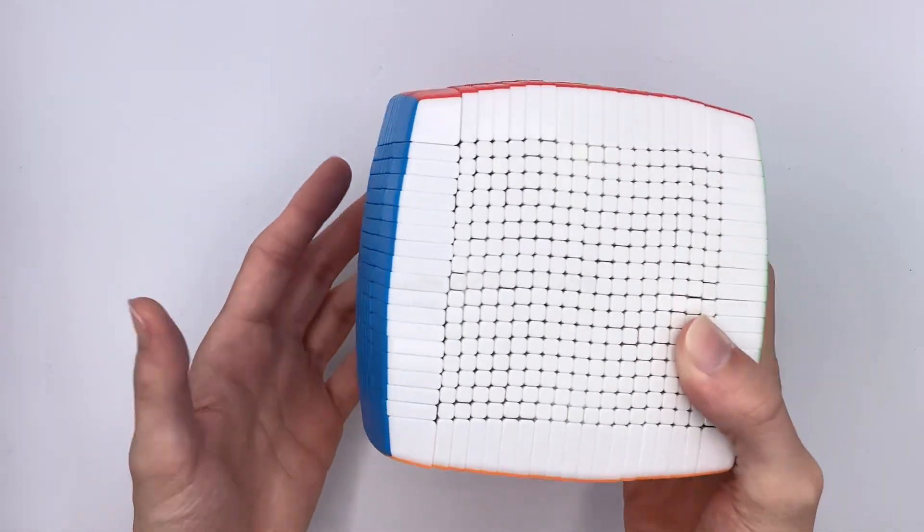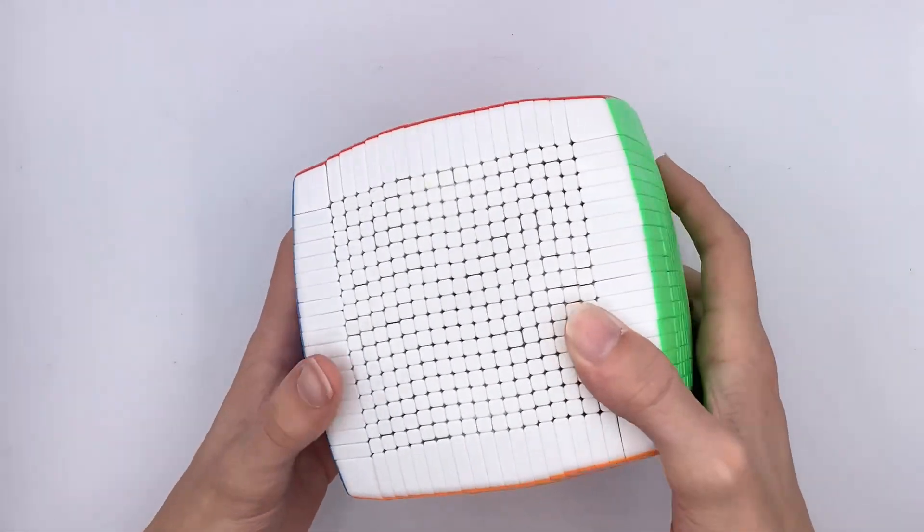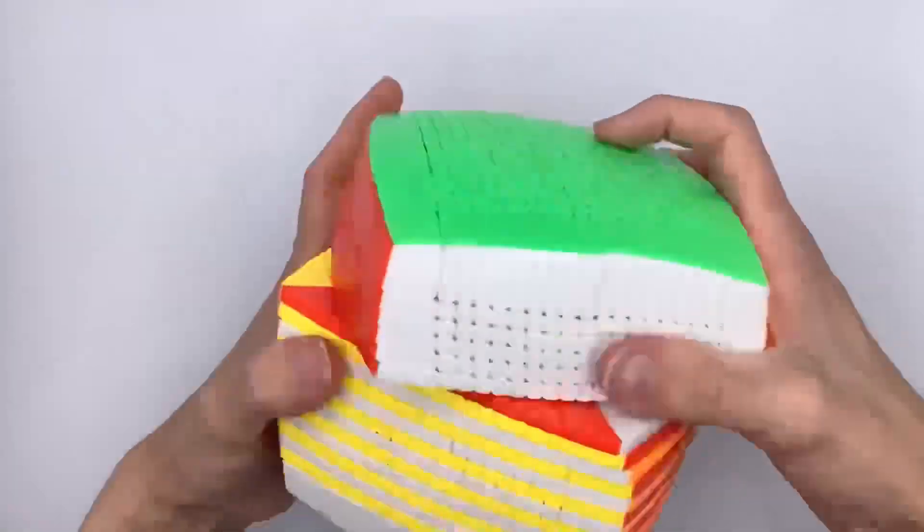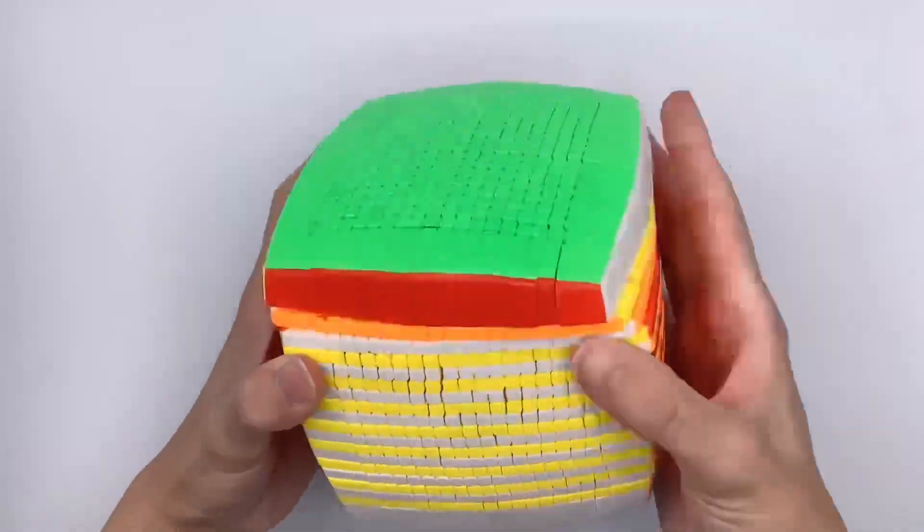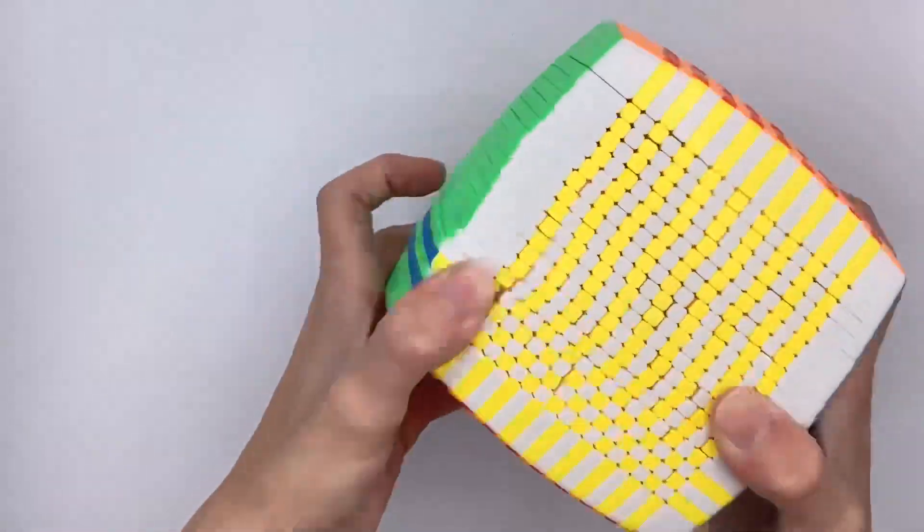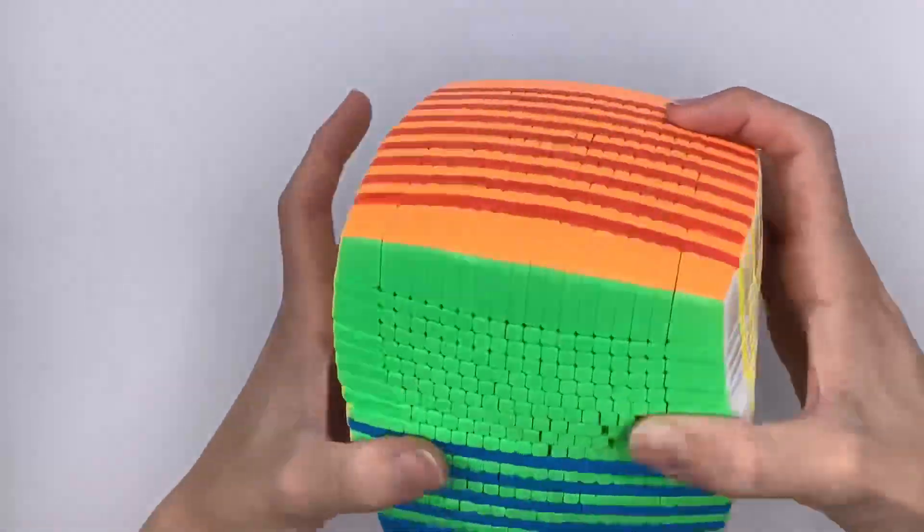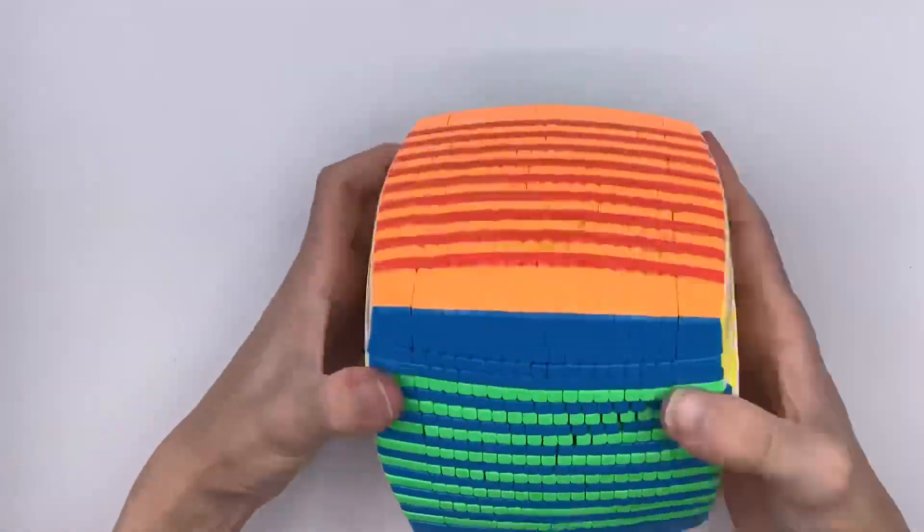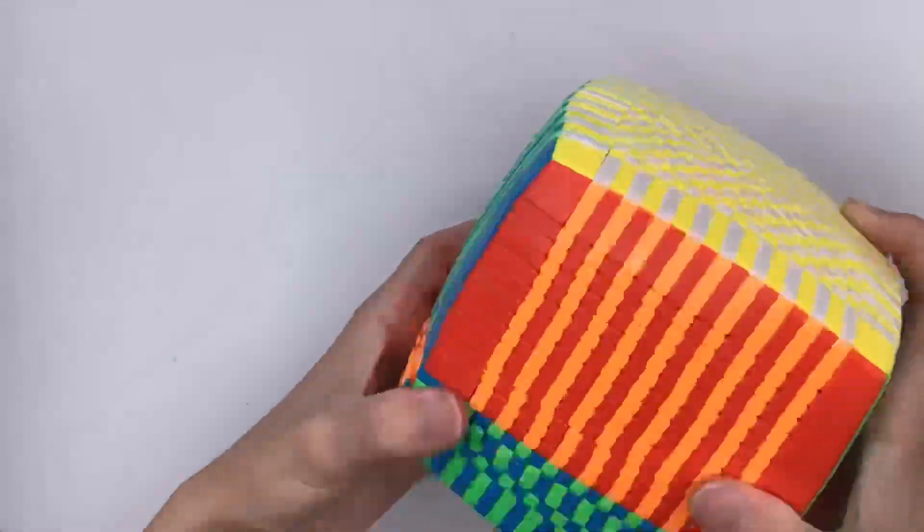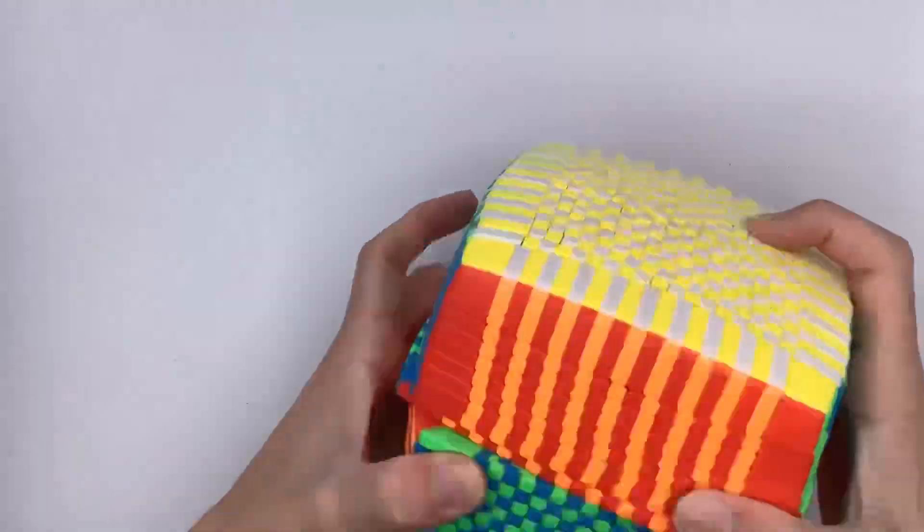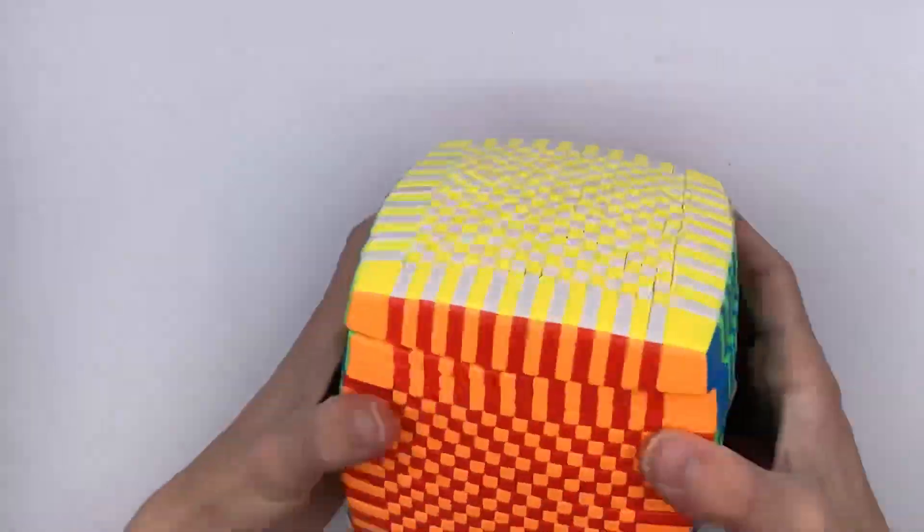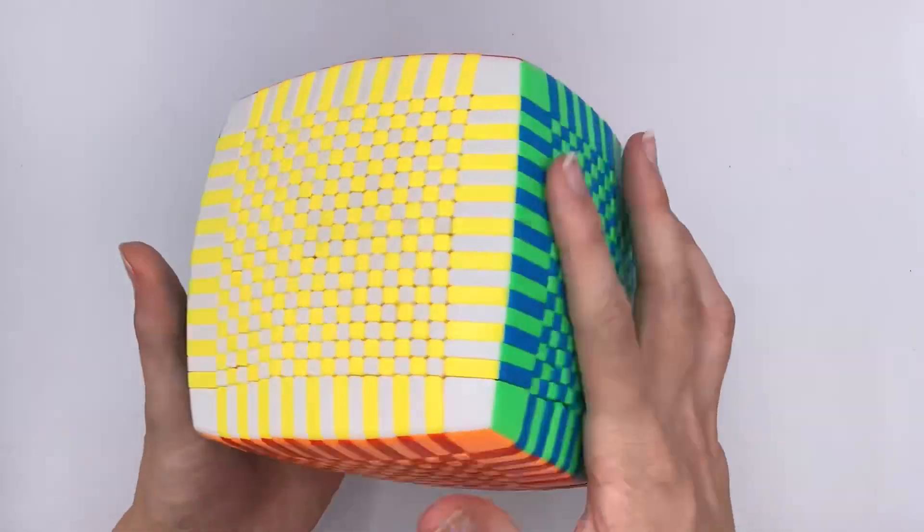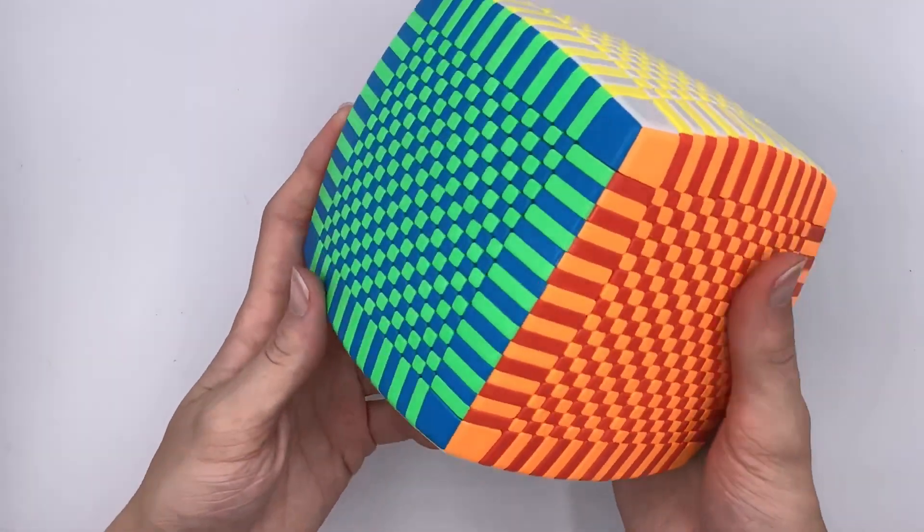Now, I'd like to go ahead and do checkerboard on this thing. So let's see what it looks like. Alright, so here's what checkerboard looks like on this thing. I would say that looks pretty cool.